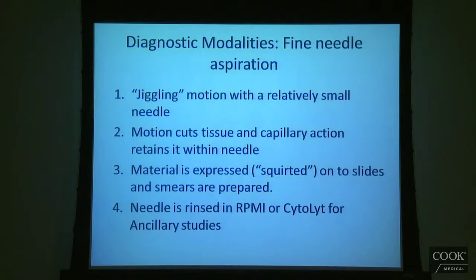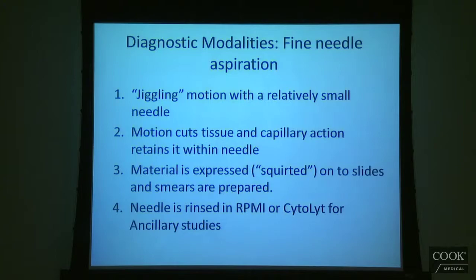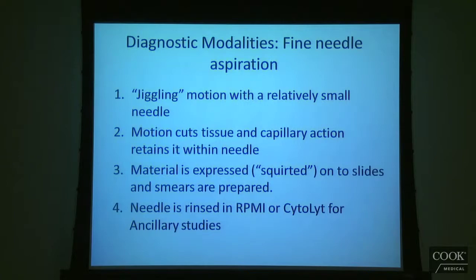You're doing this jiggling motion to cut individual cells and small groups of cells and bring them into the needle. Once you're done, you remove the needle and squirt the contents of the needle — as you see up in the endoscopy suite — onto a slide. Once you squirt it onto a slide, you can prepare slides from that material. Then generally what we do is take the needle that we used for the biopsy — it's still going to have a few little crumbs of tumor or whatever in it — and rinse it out in some sort of solution, either RPMI or cytolite typically. That material is used for ancillary studies.